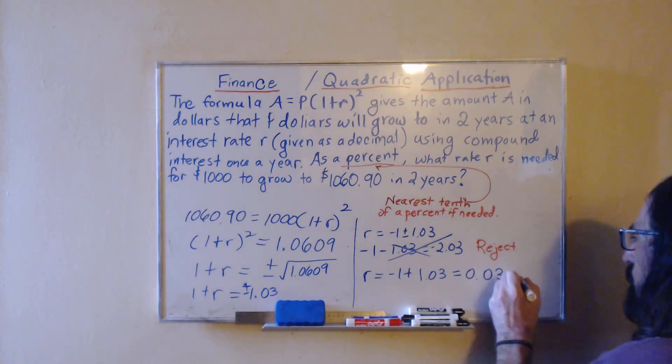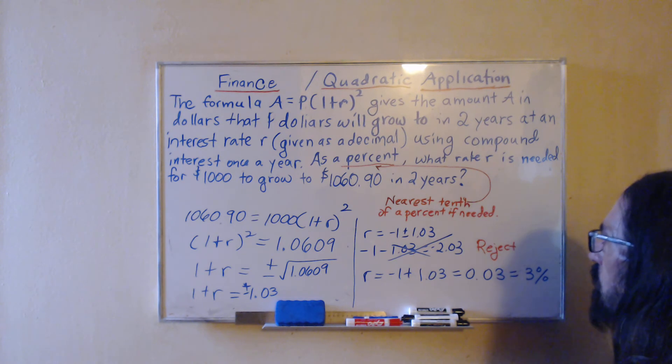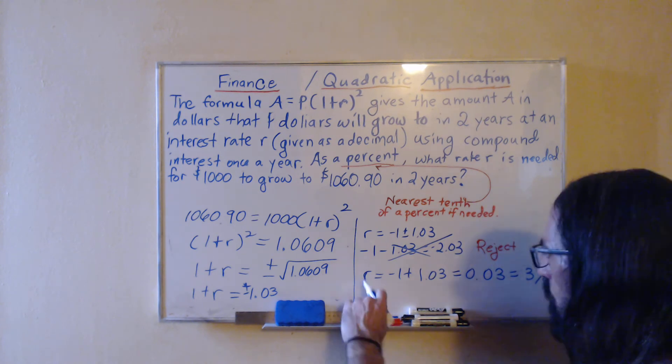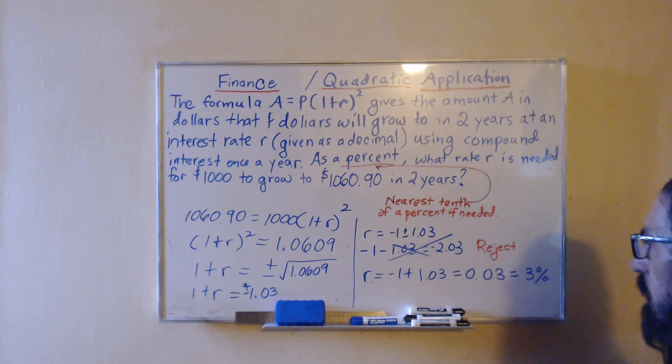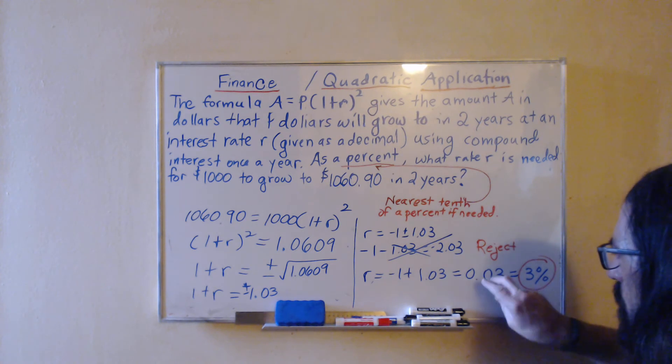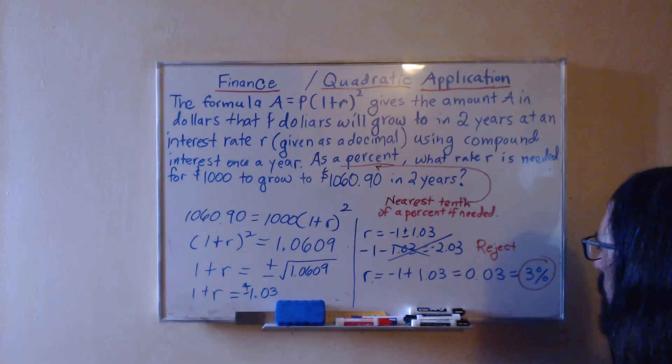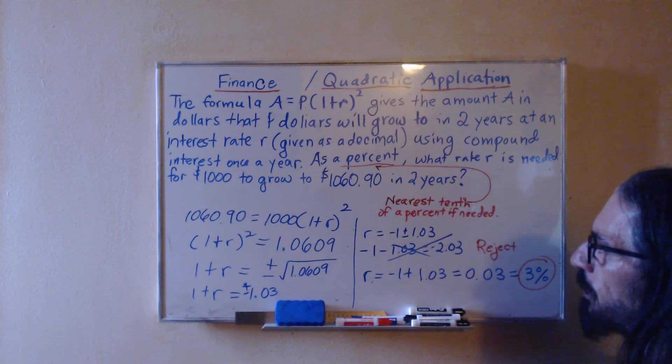And no rounding is needed. Now as a quick extra, by the way, the 0.03 to 3%, that was moving the decimal two to the right to convert from decimal to percent.